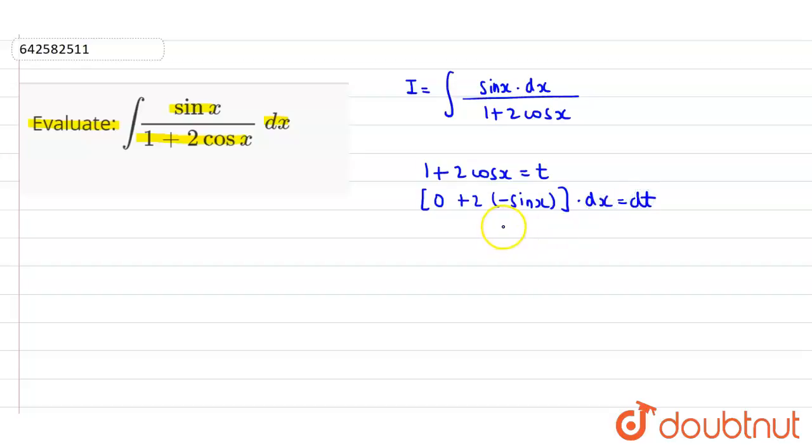So what is the value of sin x dx? The value will come out minus 1 by 2 dt. Now put all the values in the original equation.